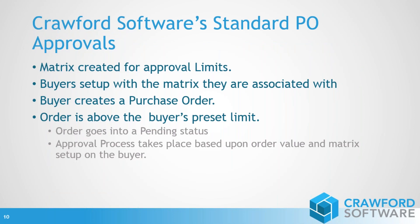Now, what does Crawford Software's standard PO approval process look like? We have a matrix — an approval process flow — where you build a matrix of approval limits. The buyers are set up with the matrix they are to be associated with. The buyer creates the purchase order, and if the order is above that buyer's preset limit, it goes into the pending status — that yellow light — and then the approval process takes place based on the order value and the matrix set up for that buyer.